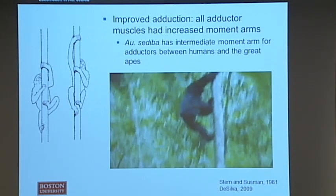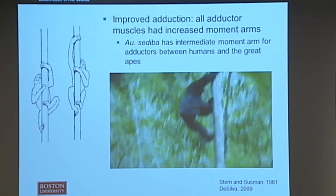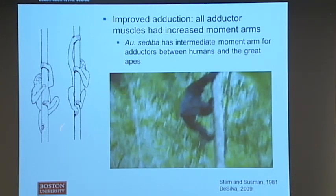So let's get into the actual results. The first thing we looked at is the moment arms of all the muscles. One of our first findings is that the adductor moment arms were significantly larger in sediba compared to modern humans, and just slightly smaller than the moment arms of adductors in modern apes. Your adductor muscles are on the inside of your thigh and allow you to bring your leg toward the midline. We think this increased moment arm in sediba is related to climbing adaptation, playing into the dual lifestyle hypothesis.